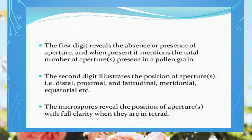Position of aperture means whether it is present on the distal end, proximal end, latitudinal end, meridional end, or equatorial end — these are the various sides of pollen. Additionally, when microspores or pollen are in tetrad form, we get further clarity about the position of apertures.